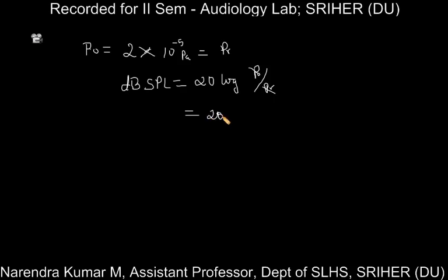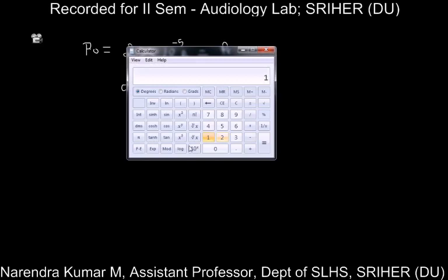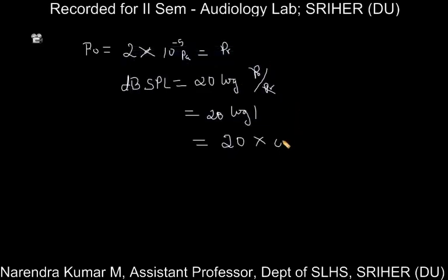So we get 20 × log(1). The value of log(1) is always 0 — log(10) is 1 and log(1) is 0. Substituting, we get 20 × 0, and anything multiplied by 0 becomes 0 decibels. So when the observed sound pressure and reference sound pressure are the same, the dB SPL scale will automatically be 0.